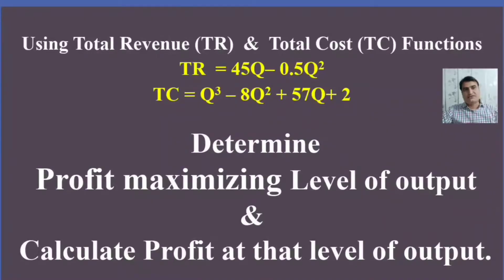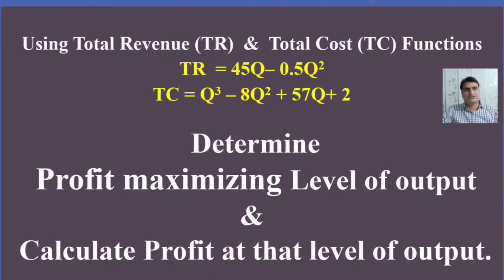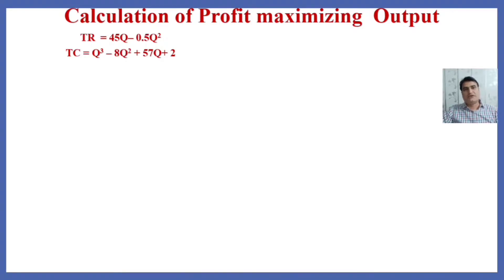In this lecture, we are going to determine the profit maximizing level of output using the total revenue and total cost function. If you want to know how to find the profit maximizing output using the marginal cost function, average cost function, or demand equation and marginal cost function, the links are given in the description.